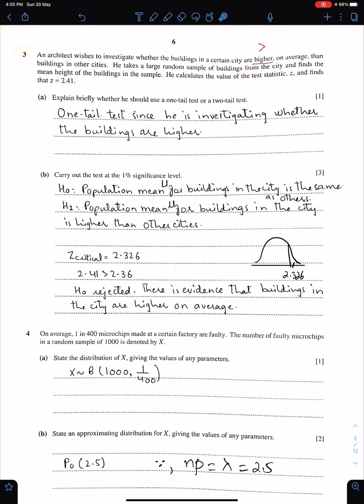Part A: Explain briefly whether he should use a one tail test or a two tail test. Because of this thing, this word higher, he should use a one tail test, the upper tail test. So one tail test, since he is investigating whether the buildings are higher.